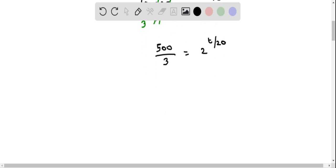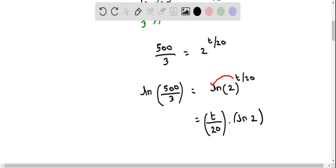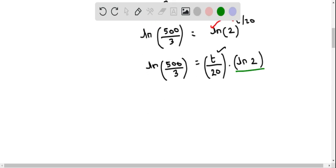Now, to solve for T, we apply natural logarithm to both sides. Therefore, we have natural logarithm of 500 divided by 3, and this equals natural logarithm of 2 raised to the power of T by 20. We utilize the power rule of natural logarithm to bring this power to the front — that is, this gets multiplied with natural logarithm of 2. So the right side expression is T by 20 multiplied with natural logarithm of 2. We then divide both sides by natural logarithm of 2.